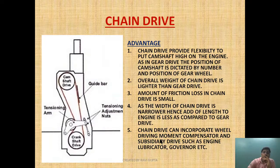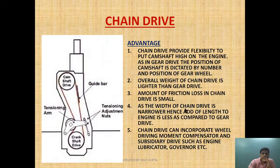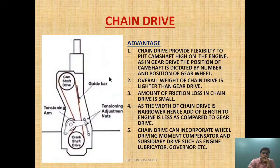Chain drive can also incorporate a wheel driving movement compensator and subsidiary drives such as engine lubricator and governor. As you can see in this diagram, the chain drive is incorporating the movement compensator and various subsidiary devices such as engine lubricator and governor, which can be incorporated in chain drive but cannot easily be incorporated in gear drive.